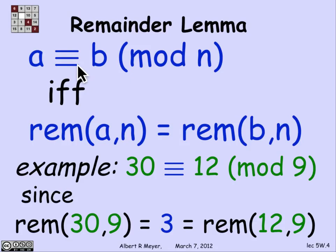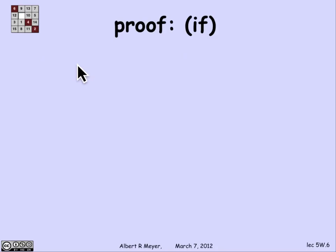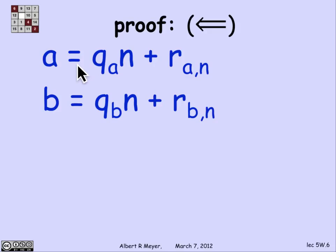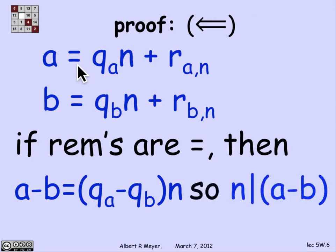Let's prove the remainder lemma. I'll abbreviate the remainder of b divided by n as r-sub-bn to fit the notation. The 'if' direction — from right to left — requires proving that if a and b have the same remainder, then they're congruent. By the division algorithm, each of a and b can be expressed as a quotient times n plus a remainder. If the remainders are equal, then a minus b equals (q_a minus q_b) times n, which is clearly a multiple of n. So a is congruent to b.